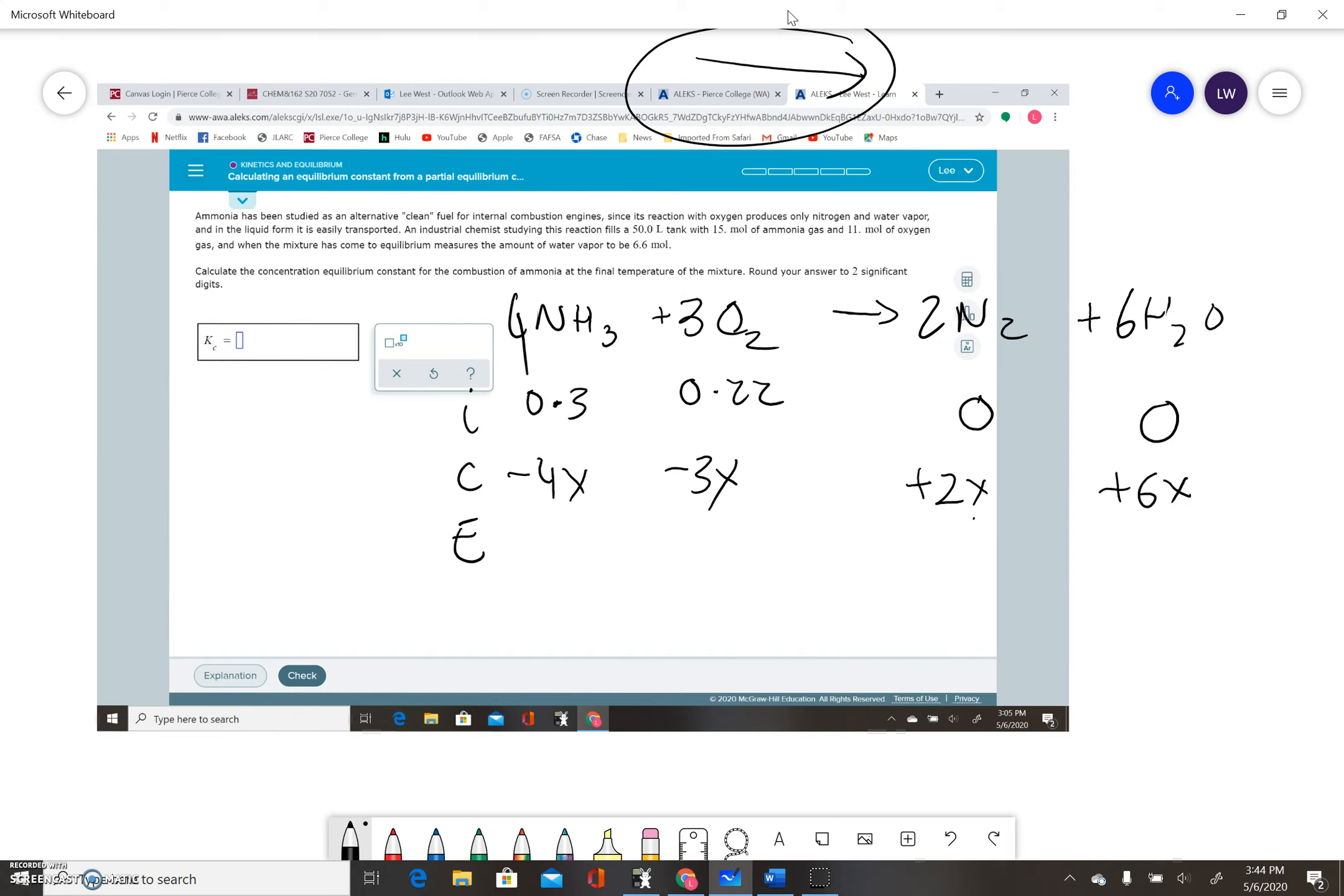The other cool thing they give you here is the equilibrium amount of water vapor. You get 6.6 moles, and that's in the 50-liter container. So we can calculate that: 6.6 on 50, and that ends up being 0.132.